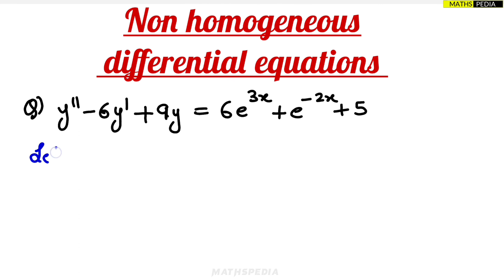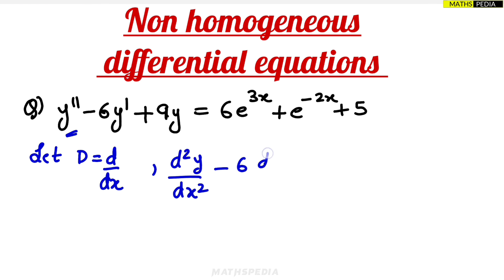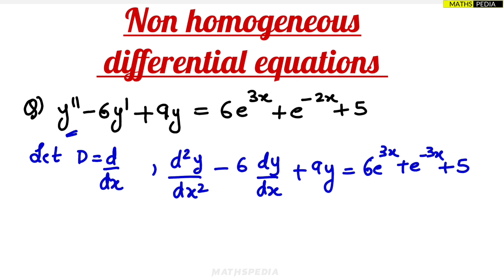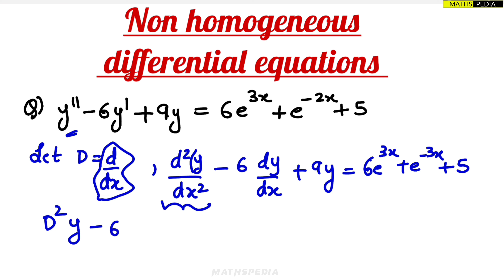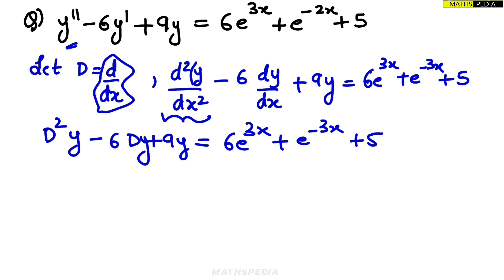The first step is to assume D = d/dx. So y'' can be written as d²y/dx², giving us: d²y/dx² − 6·dy/dx + 9y = RHS. Since D = d/dx, we rewrite this as D²y − 6Dy + 9y = RHS, factoring out y to get (D² − 6D + 9)y = RHS.